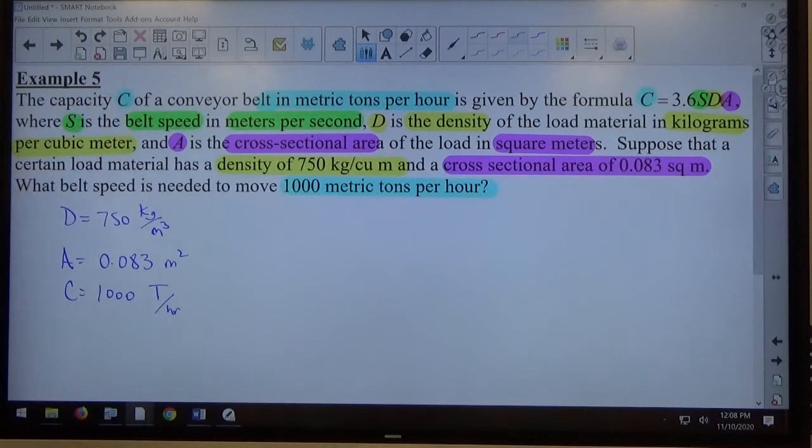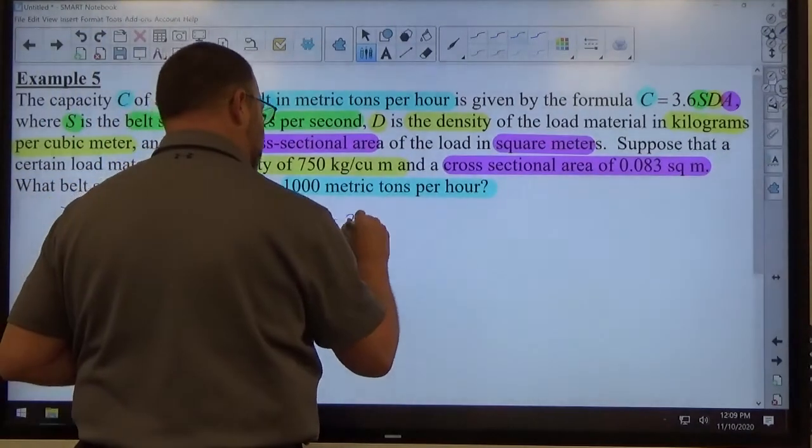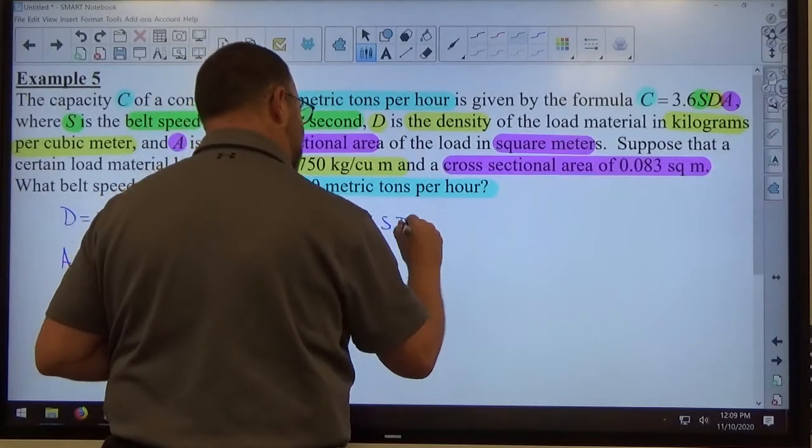And they've got a formula over there very clearly that says how C, S, D, and A relate to each other. So I know C equals 3.6 S D A.